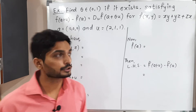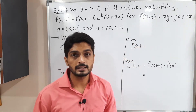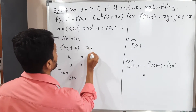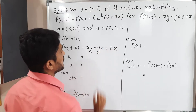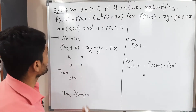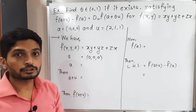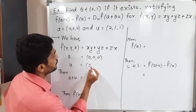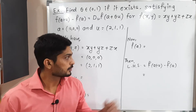First, let us write the given information. We have the function f(x, y, z) = xy + yz + zx. One point is also provided: a = (0, 0, 0), and u, the direction in which we find the derivative, is given as u = (2, 1, 1).